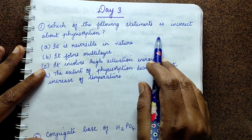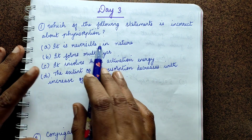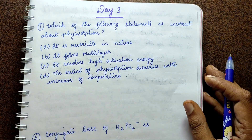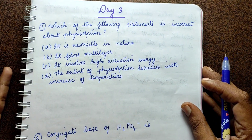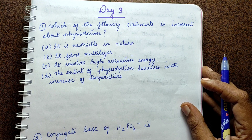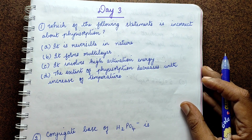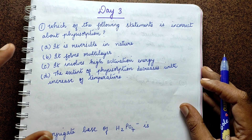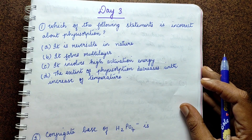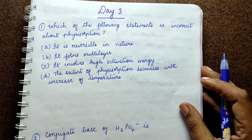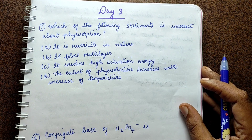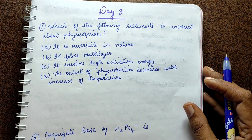Which of the following statements is incorrect about physisorption? So in the surface chemistry lesson, we learned about the types of adsorption. One is chemisorption and one is physisorption. So in this question, we look at physisorption. On the characteristics, we need to identify which statement is incorrect.